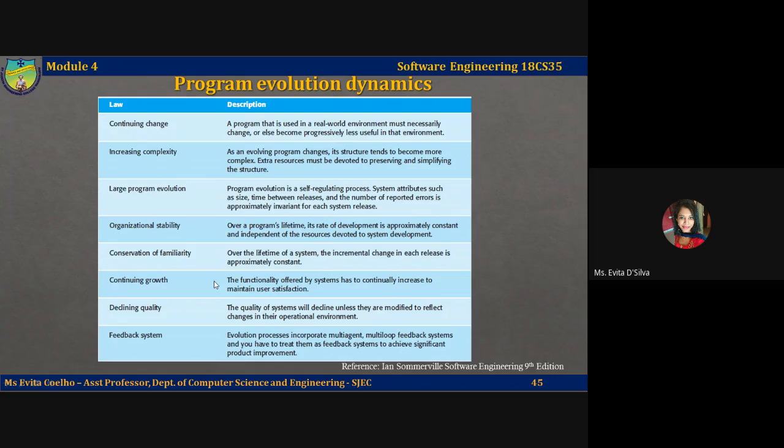This is consistent with the third law, which suggests that program evolution is largely independent of management decisions. This law confirms that large software development teams are often unproductive because communication overheads dominate the work done by the team.